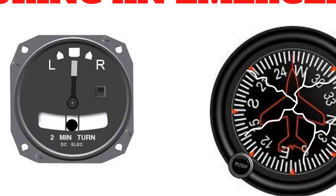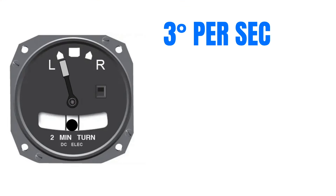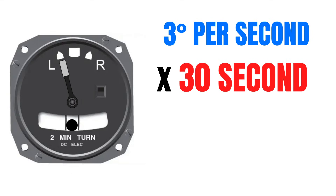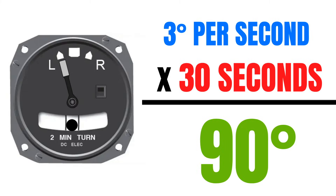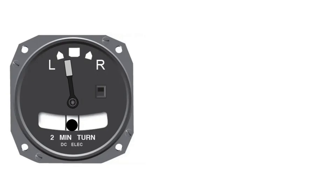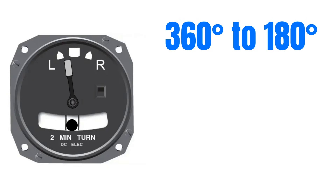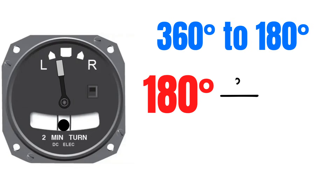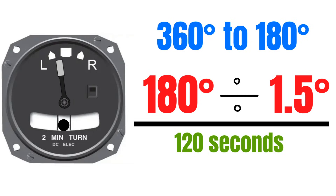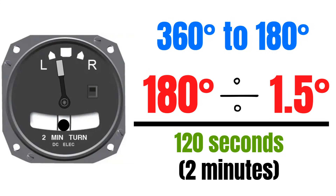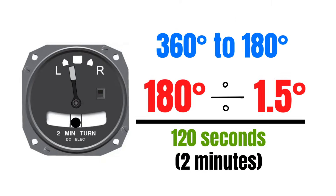This can also be helpful during an emergency when you lose some of your other instruments — you can actually turn to a heading based on timing. If I know that I'm turning at a standard rate of three degrees per second, and I turn at standard rate for 30 seconds, I'll turn exactly 90 degrees because three degrees times 30 equals 90. What if I'm turning at half the standard rate and need to go from a heading of 360 to 180? That's 180 degrees. At 1.5 degrees per second, 180 divided by 1.5 equals 120 seconds — so it's going to take me two minutes to make that turn.